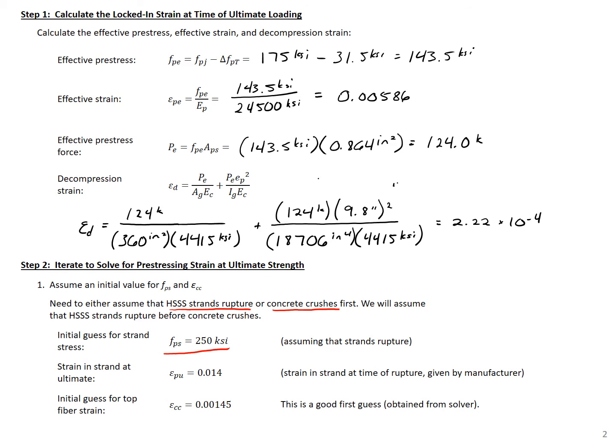We're going to guess initially that our strand stress is the rupture strength, or ultimate strength, so 250 ksi, and the strain at ultimate in the strand is the ultimate strain given by the manufacturer — for this strand, we're assuming 0.014. Next, we need an initial guess for our top fiber strain. Since we're assuming the strands rupture before the concrete crushes, this strain needs to be less than 0.003. We're going to assume that the strain in our top fiber is equal to 0.00145 at time of failure.